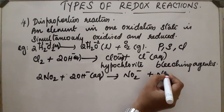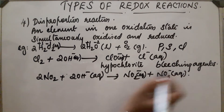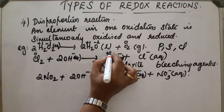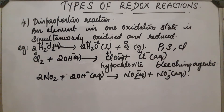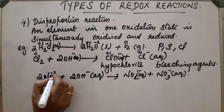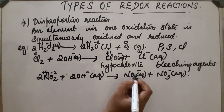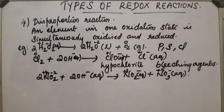In the NO₂ reaction, nitrogen starts at a plus 4 oxidation state. It decreases from plus 4 to plus 3 in one product (NO₂⁻), which is reduction, and increases from plus 4 to plus 5 in the other product (NO₃⁻), which is oxidation. This makes it another disproportionation reaction.